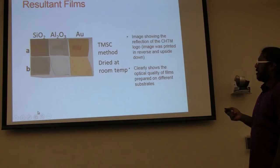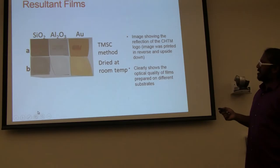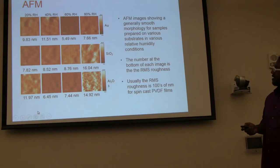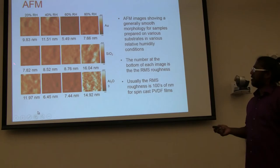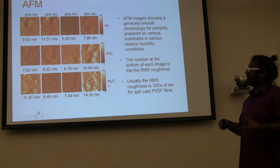And so these are the resulting films. These are on SiO2, aluminum oxide, and gold. We're using this TMSC method that we developed. And these are how the films look if we just don't do it at all. The reason we did SiO2 and Al2O3 and gold is because we wanted to see if different surfaces affected it. Which it doesn't. But the cool thing is this UNM and the CHT logo was actually being reflected. So the film is optically clear. As opposed to this film where you can't see any reflection from it.